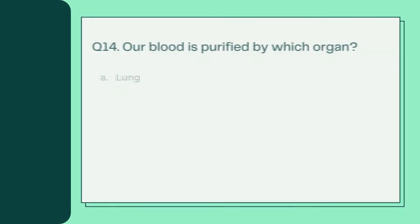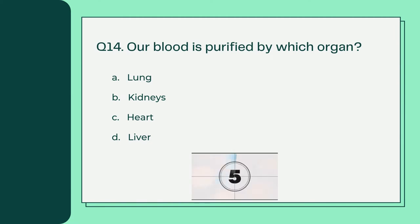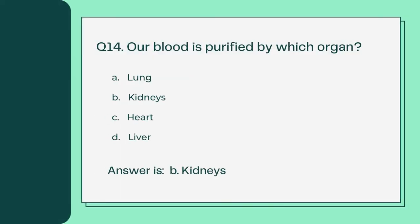Our blood is purified by which organ? A. Lung B. Kidneys C. Heart D. Liver. Answer is B. Kidneys.